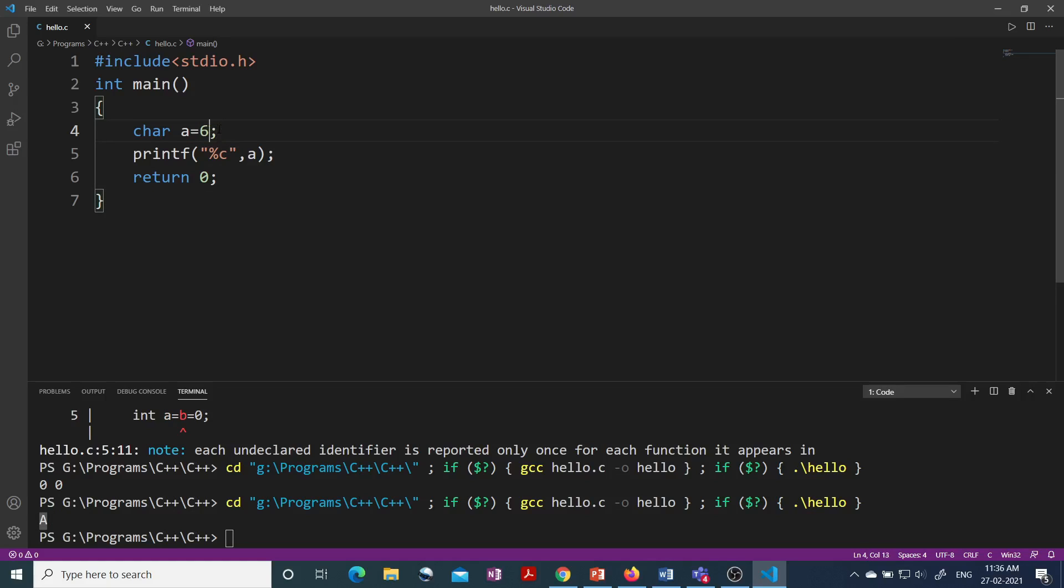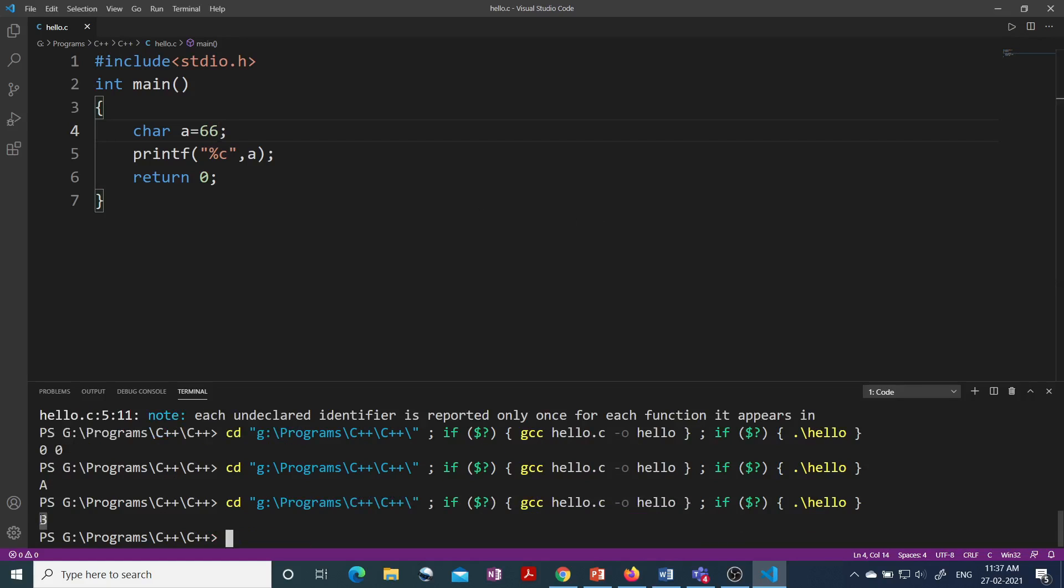Let's say if I write here 66 then see what is the output. You see now I am getting capital B. So why I am not getting any compile time error and I am getting these answers.